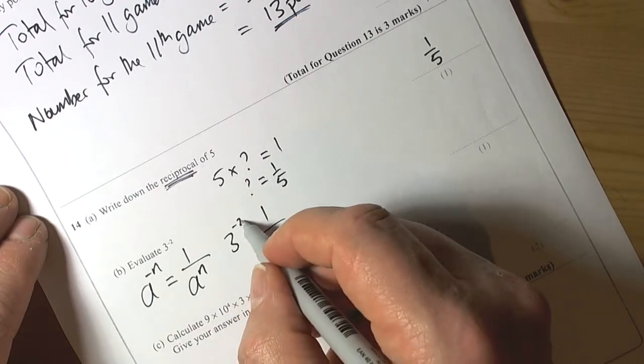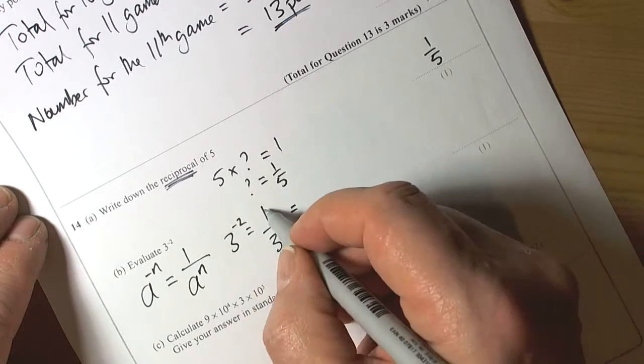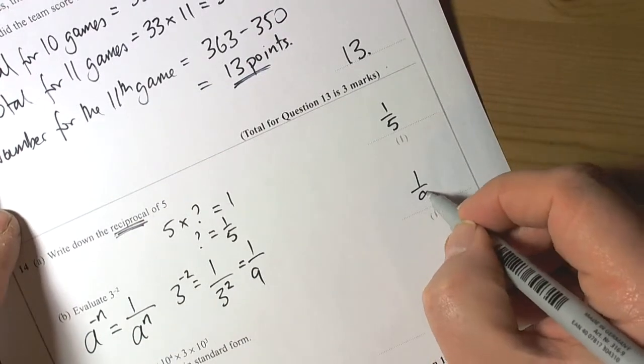In this case, three to the negative two is going to be one over three squared. It says evaluate, so it means don't leave it as a power, you actually work out what three squared is. That's going to be one ninth.